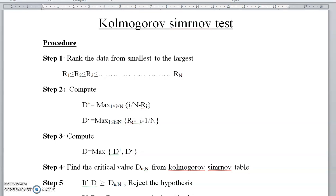Hello everyone. Today we are going to see a problem on the Kolmogorov-Smirnov test. First let us see the procedure. Step 1 is to rank the data from smallest to largest — that is, arrange the random numbers in ascending order such that r1 ≤ r2 ≤ r3 ≤ ... ≤ rn.